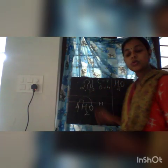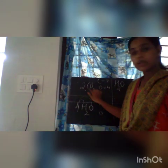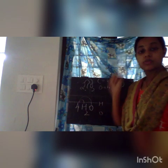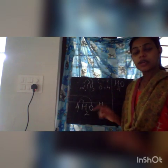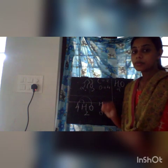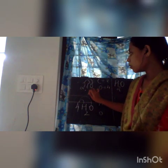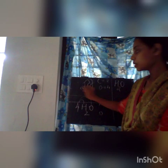Now we can learn how to find the number of atoms in a compound. Here is CO2, that is carbon dioxide. There are two elements: carbon and oxygen. The coefficient 2 is common to both carbon and oxygen. So for carbon, 2 into 1 equals 2. For oxygen, 2 is common and the subscript is 2, so 2 into 2 equals 4.